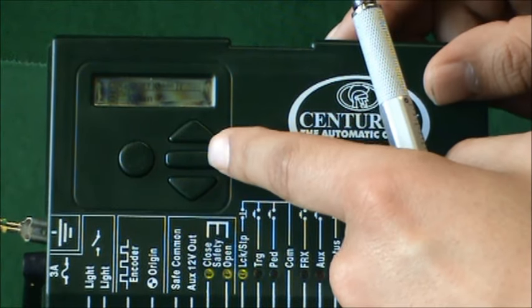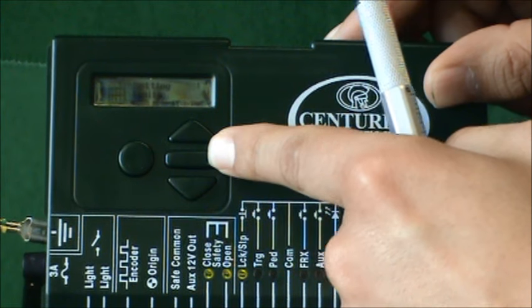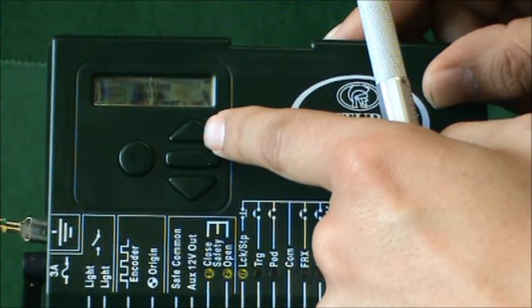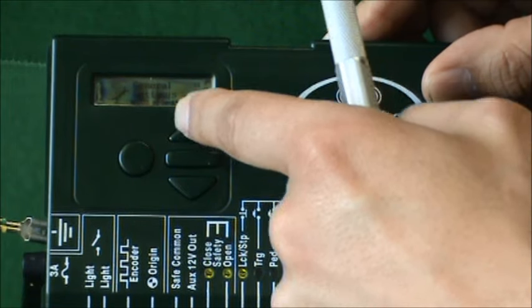Simply enter the main menu by pressing and holding the center button for two seconds. You're now looking for the general settings menu, which you can access by pressing the up arrow until you find it.